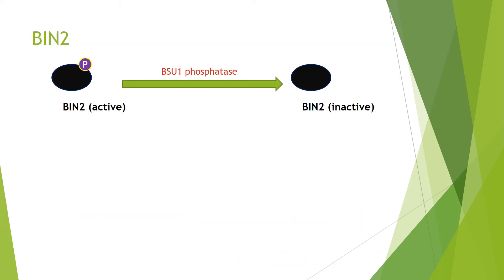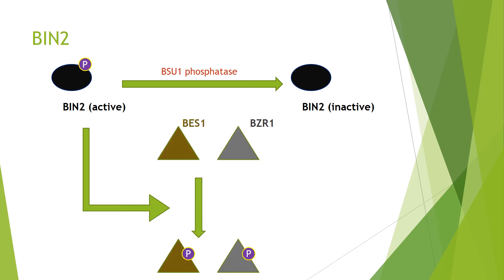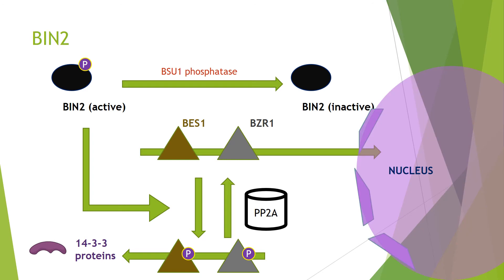BIN2 is inactivated by brassinosteroid-stimulated BSU1 phosphatase. Therefore, without brassinosteroids, BIN2 is in a phosphorylated and active state. In this state, it can phosphorylate transcription factors BES1 and BZR1, which can then be sequestered in the cytosol by 14-3-3 proteins. Sequestering in the cytosol takes them away from the nucleus, so they cannot act as transcription factors. They can only act as transcription factors when unphosphorylated, when brassinosteroids are present.